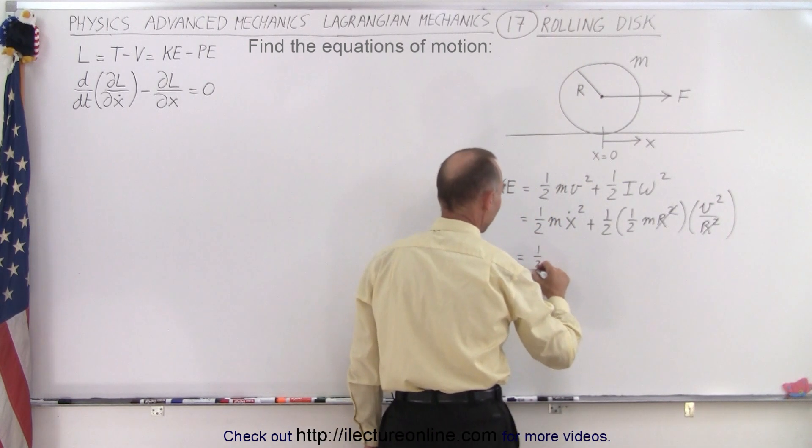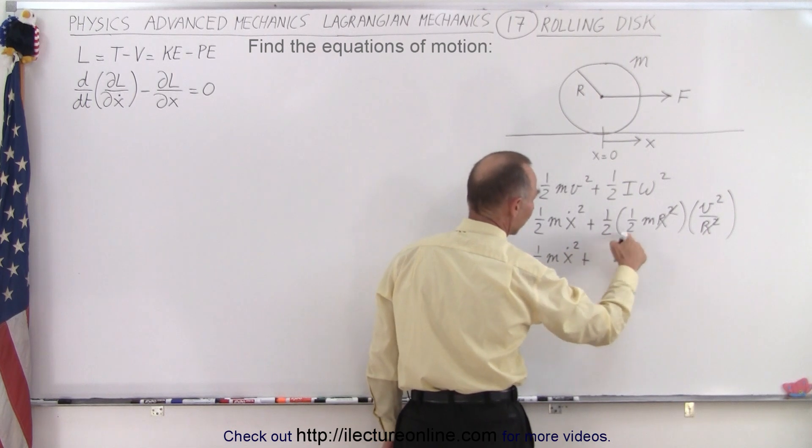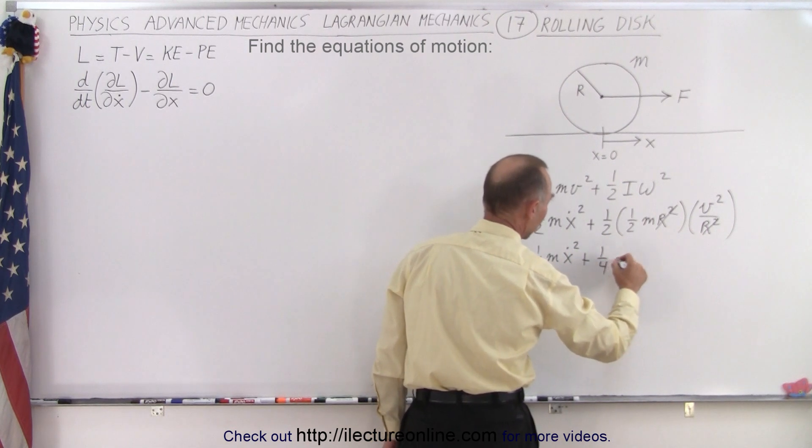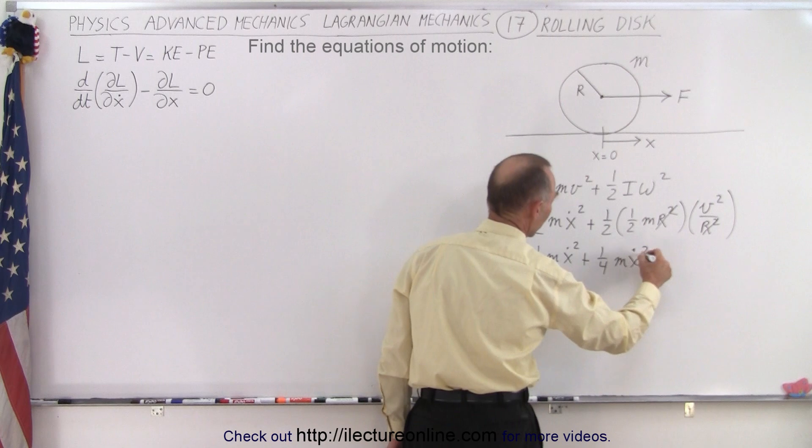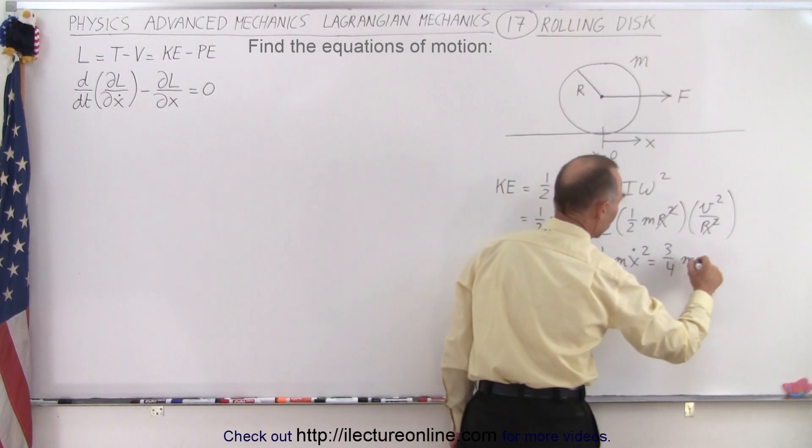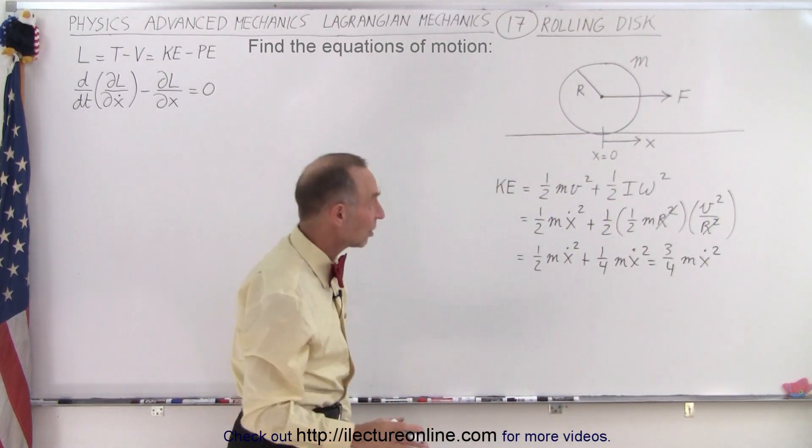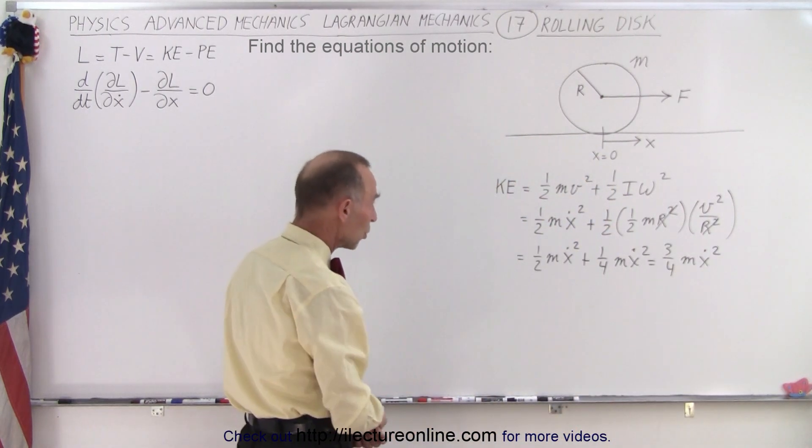So we end up with one-half M x dot squared plus a half times a half, which is a quarter, M x dot squared. And we combine the two, we get three-quarters M x dot squared. So that is the kinetic energy of the system once it's in motion.